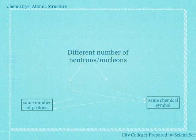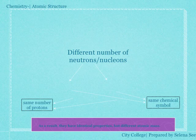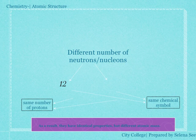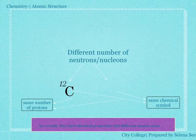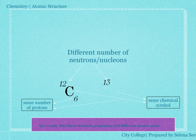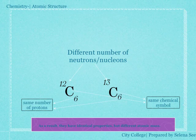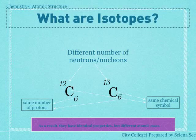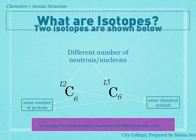What is an isotope? Isotopes are atoms of the same element with the same proton number but different number of neutrons.